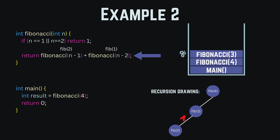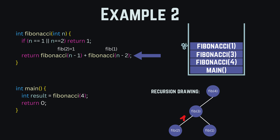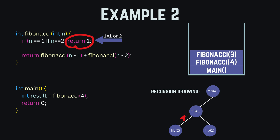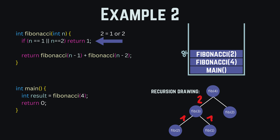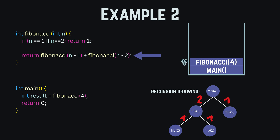We continue processing fibonacci(3): fibonacci(2) returned 1, and now we add fibonacci(1) to it. Fibonacci(1) is put on the stack and the base case applies, so it returns 1 as well. We resume with fibonacci(3), both recursive calls are now calculated, and we return the value of 2 for fibonacci(3). Fibonacci(3) is done processing. We continue with fibonacci(4), where we now calculate the second part: fibonacci(2) is put on the call stack, the base case applies, and we return 1. We continue with fibonacci(4), add 2 plus 1 together, return 3, and we are done with fibonacci(4).